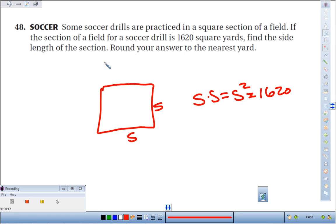Find the side length of the section and round your answer to the nearest yard. So basically, what number times itself is 1620?